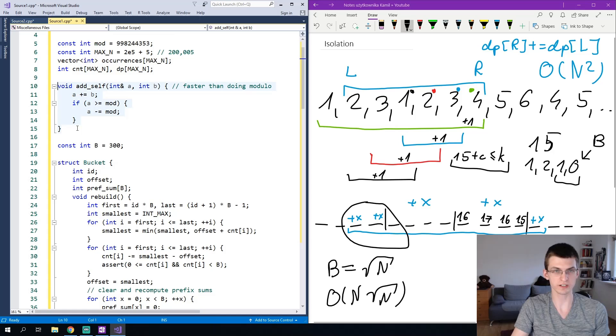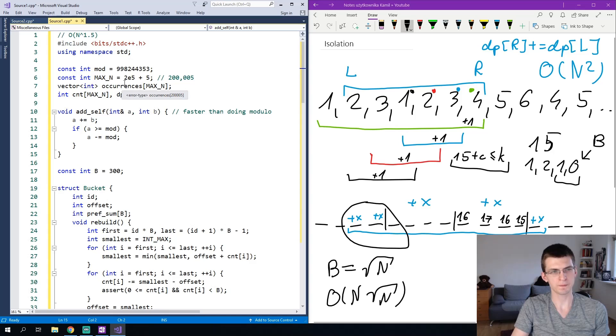Also I advise not doing modulo because it's slow. So a function like that will improve the running time of your code. And the last thing is that be careful about the size of arrays, max n. Because maybe in your rebuild bucket function, you will iterate for a bucket from its first to last element. And then that can go over the array. It can go outside the bounds. So I think the needed size for this array is n plus b. Because the last bucket can go slightly outside. So to make sure I made here the size two times the maximum n given in the statement to avoid runtime error.